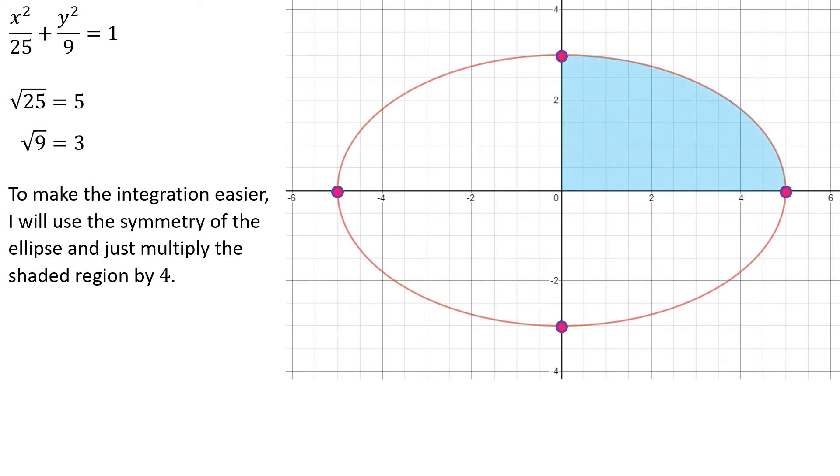Now, I'm going to make my life a little bit easier. And I say, hey, you know what? If I can find one fourth of that ellipse, I can just multiply that answer by 4. And the reason why this makes it really nice is that notice that I've got an upper curve, but I won't have to worry about a lower curve because I'm just going to go from the curve to the x-axis.